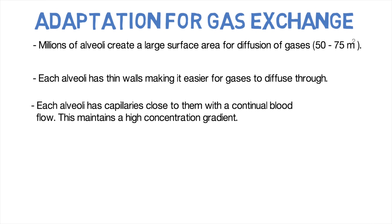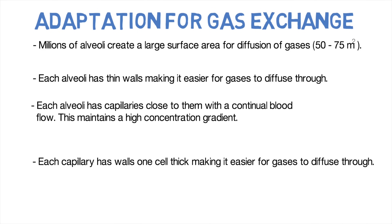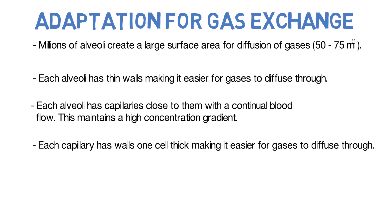Third, each alveolus has capillaries close to it, providing a continual blood flow which maintains high concentration gradients so that oxygen can diffuse into the blood and carbon dioxide can diffuse out. Fourth, each capillary has walls that are only one cell thick, making it very easy for gases to diffuse through.